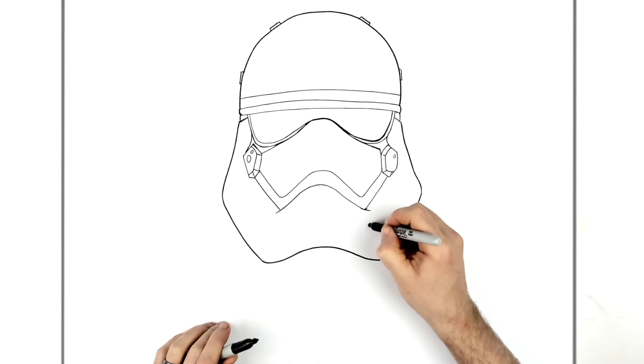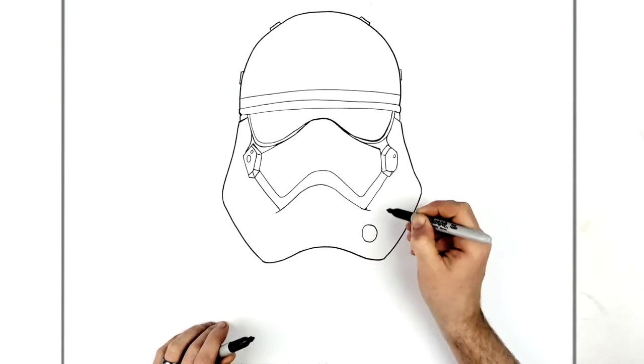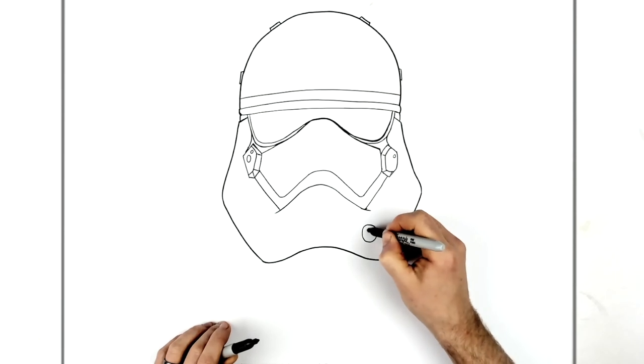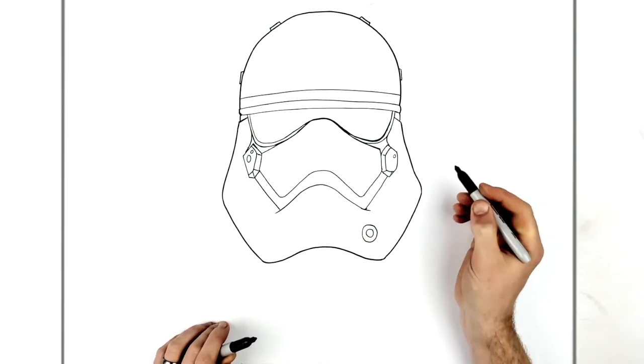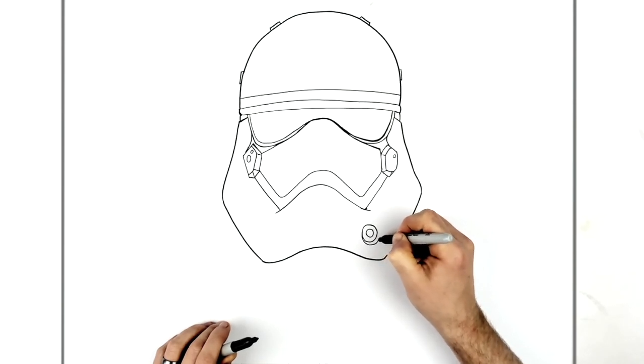And so we have like a circle here, like a speaker or something. I guess it is probably a speaker, it's where they speak out of. Like that. And it has an extra line just around to show that it's kind of sitting in the helmet.